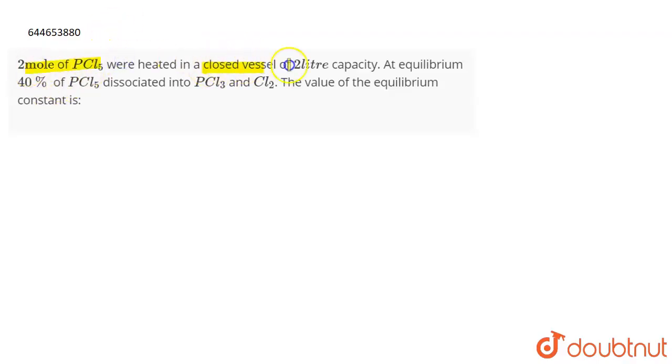The question is: two moles of PCl5 are heated in a closed vessel of 2 liter capacity. At equilibrium, 40 percent of PCl5 dissociated into PCl3 and Cl2. The value of the equilibrium constant is?